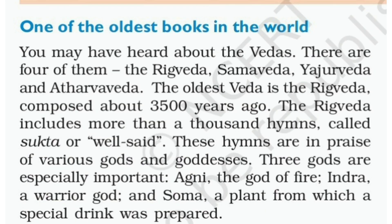One of the oldest books in the world — you may have heard about the Vedas. There are four of them: the Rig Veda, Sam Veda, Yajur Veda, and Atharva Veda. The oldest Veda is the Rig Veda, composed about 3,500 years ago.